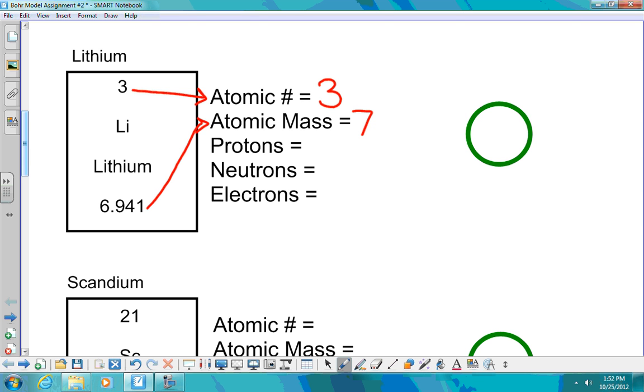Protons come from the atomic number. The atomic number gives us how many protons there are in an atom. Neutrons come from taking the atomic mass minus the atomic number, giving us the number of neutrons. So we have four neutrons in this case. And in this case, this gives us a neutral atom. We know that the number of protons will also equal the number of electrons.